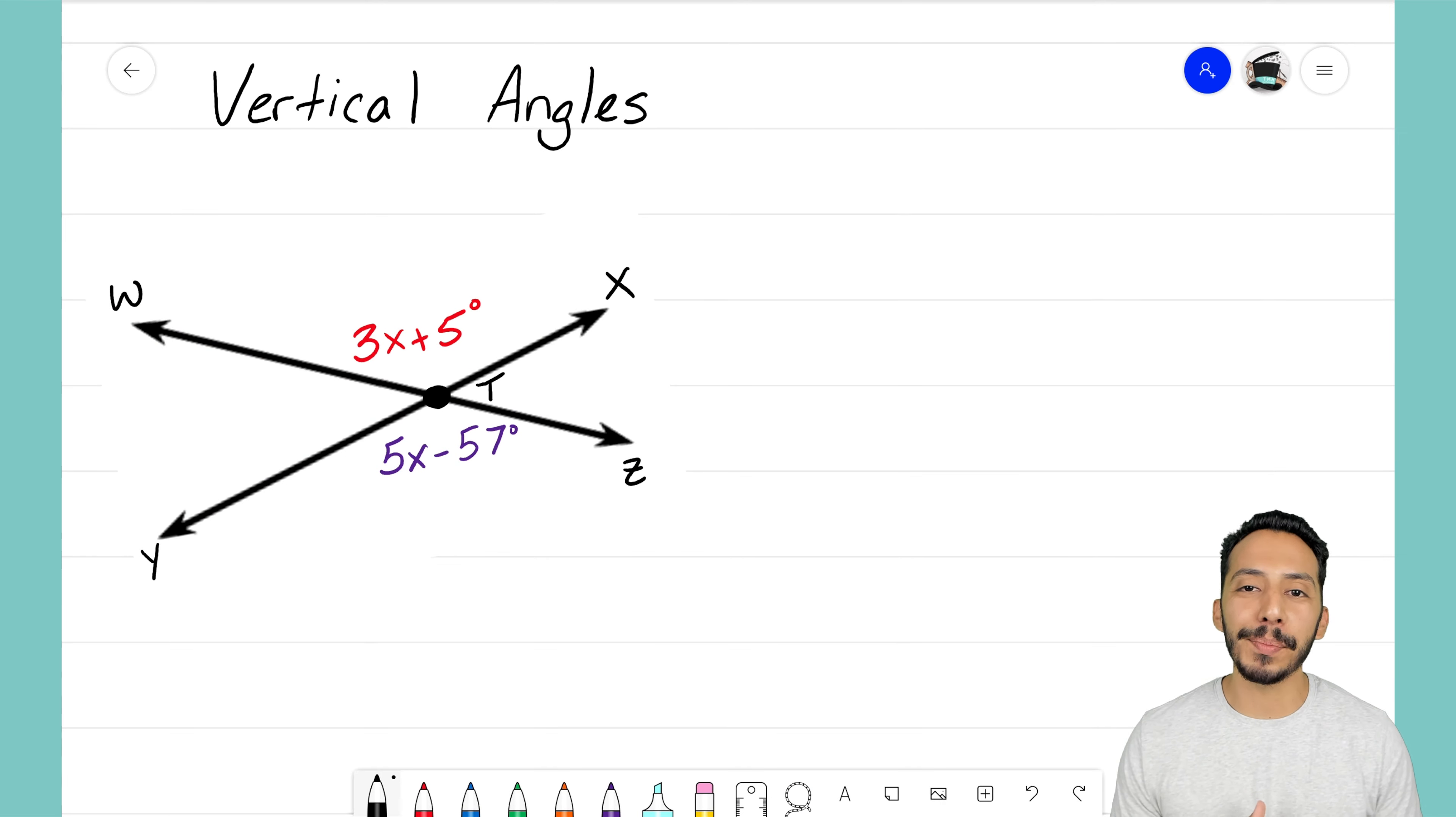Let's go ahead and jump right into this example problem where I see two lines intersecting. I have line WZ intersecting the line XY at this middle point called T, and notice we have two angles set up, two angles that are opposite of each other, which means that they must be vertical.